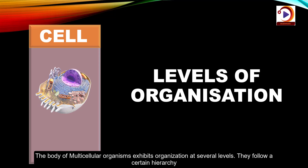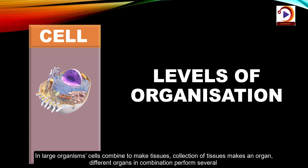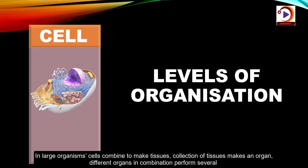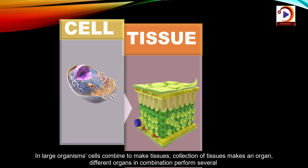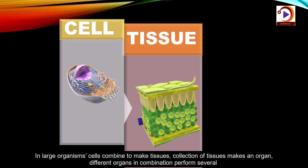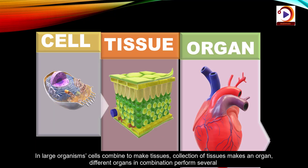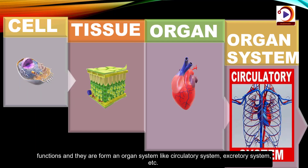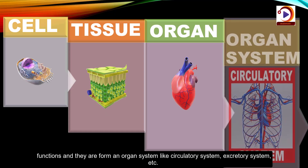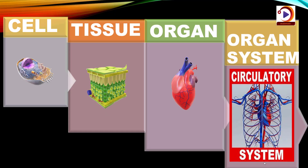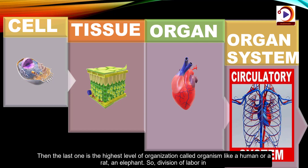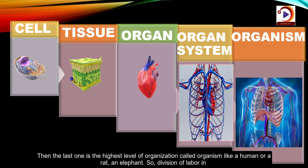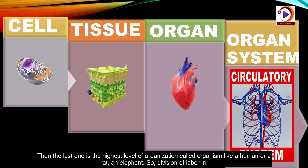They follow a certain hierarchy. In large organisms, cells combine to make tissues, and a collection of tissues makes an organ. Different organs in combination perform several functions and they form an organ system — for example, the circulatory system, excretory system, digestive system and so on. The highest level of organization is called an organism, like human beings, a rat, or an elephant.